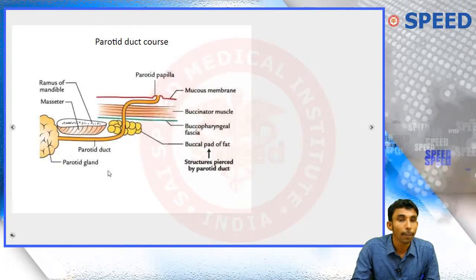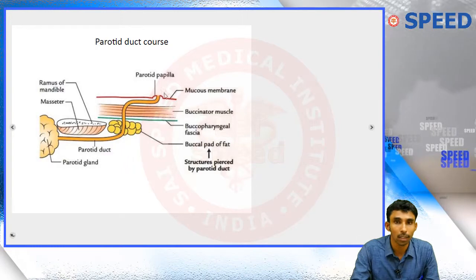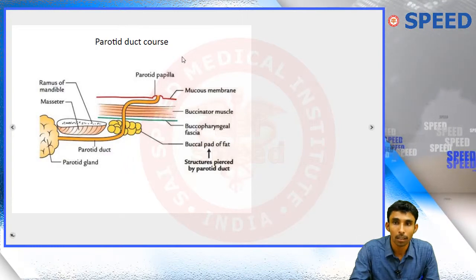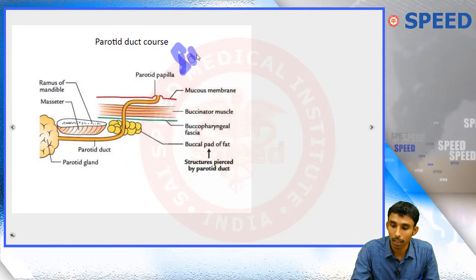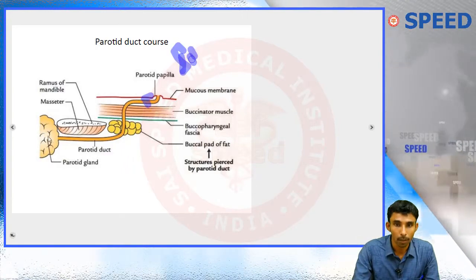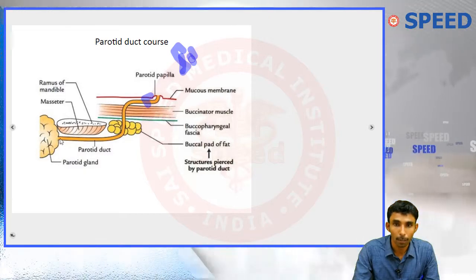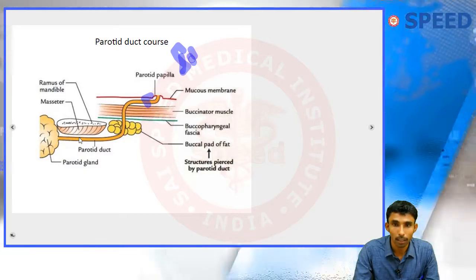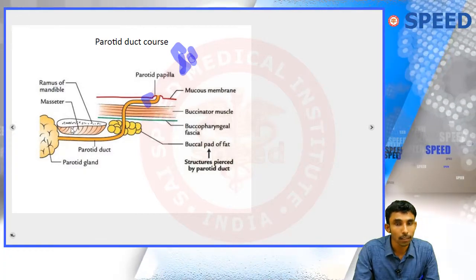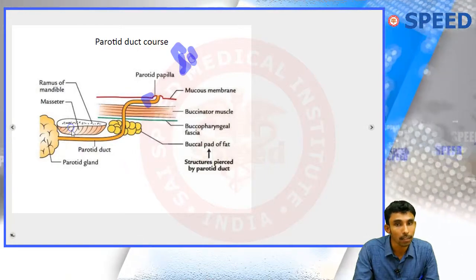The parotid duct is also known as Stensen's duct. From the anterior border of the parotid gland, the duct emerges and passes over the masseter muscle, which is located just in front of the parotid gland.